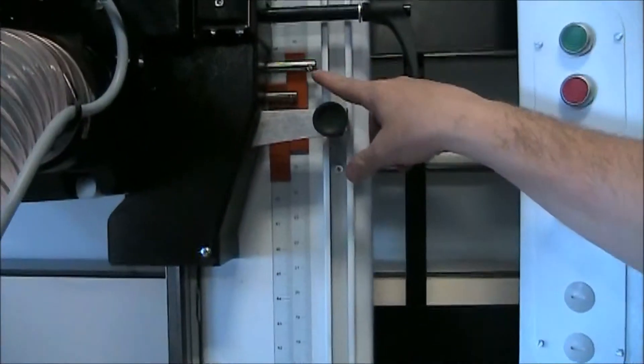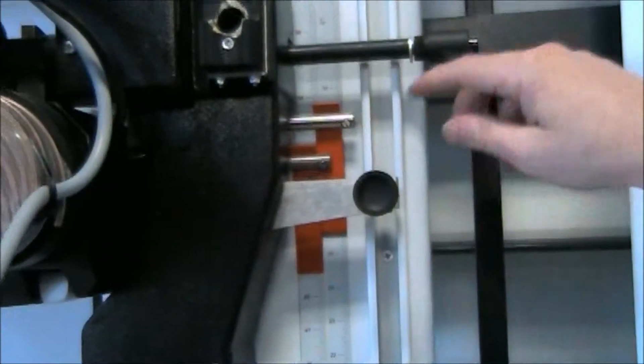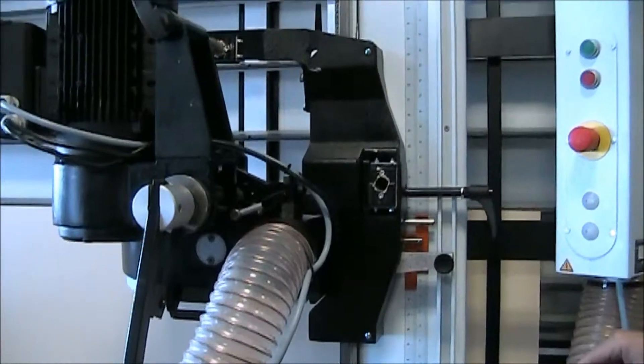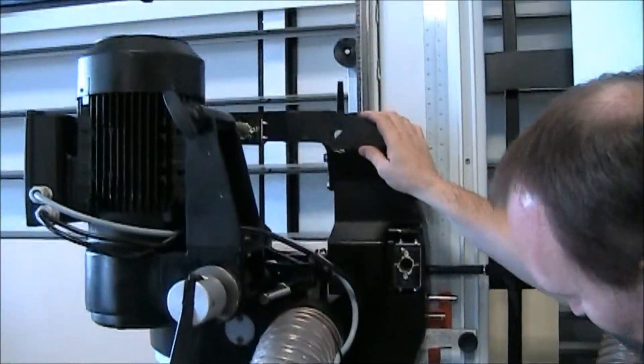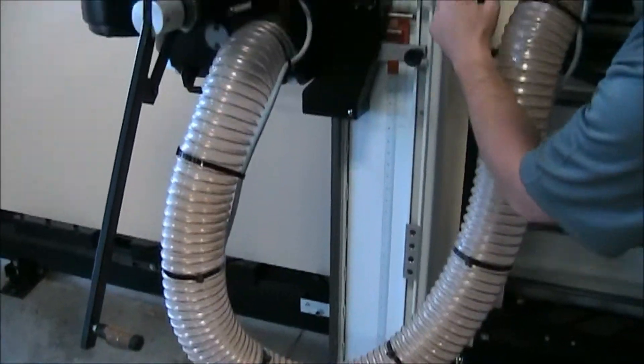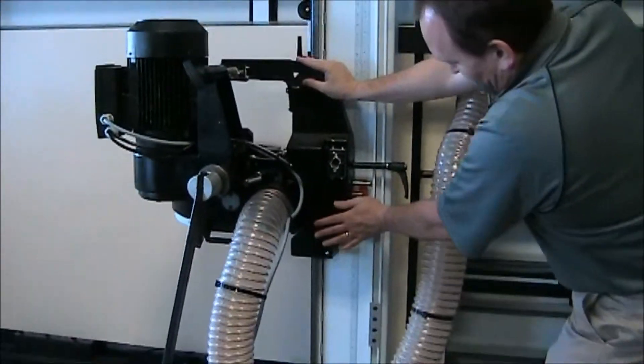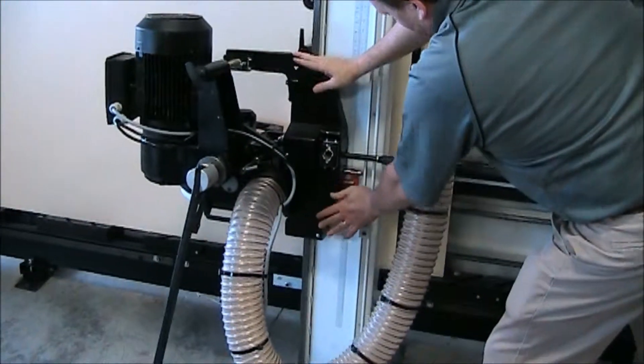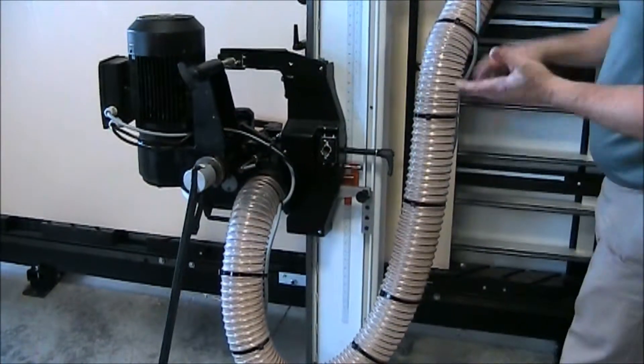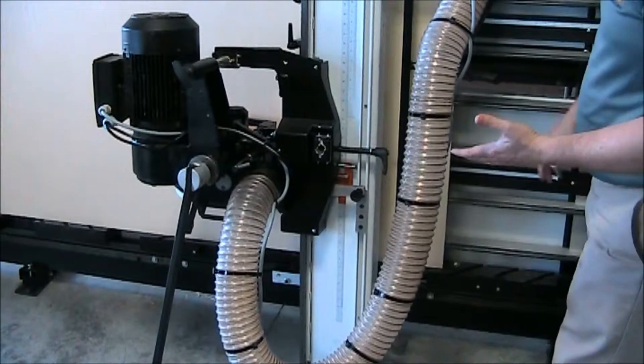Of course, those are adjustable if you need to, but they should all be adjusted from the factory. If you have common stops that you use, you can actually adjust these to different positions on here. And then when you want to come down to that stop—boom, you hit that stop, lock it in position. So if you've got four or five different rip cuts you do all the time, that's perfect for that.